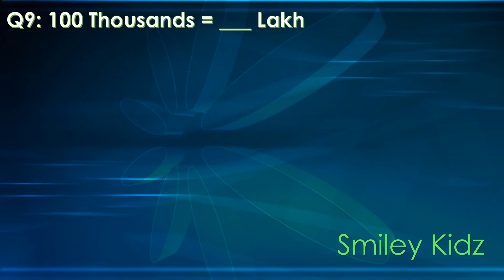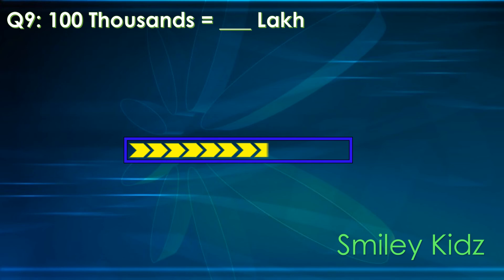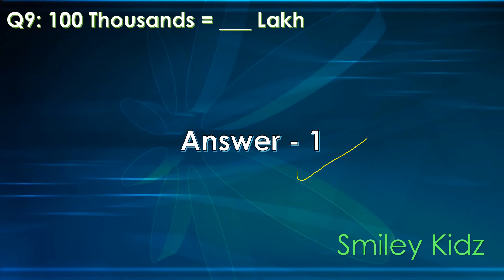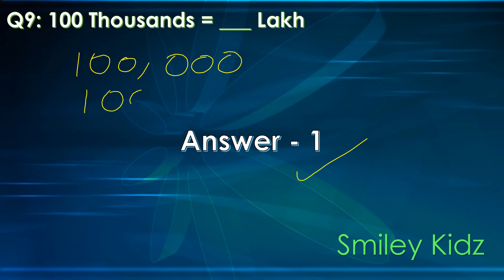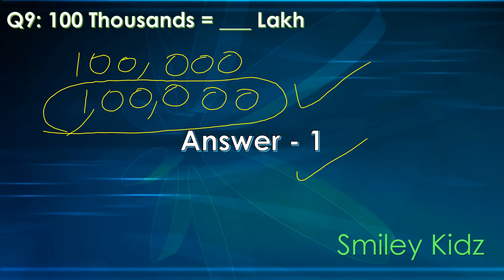Question number 9. 100,000 is equal to blank lakh. Your time starts now. Now let me write 100,000 and convert it into lakhs. I will keep a comma after 3 digits and afterwards 2 digits. So our answer is 1 lakh.